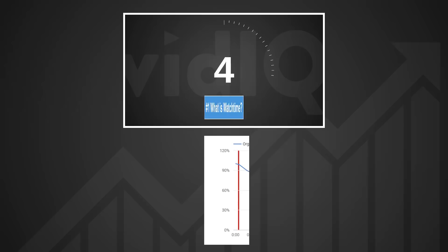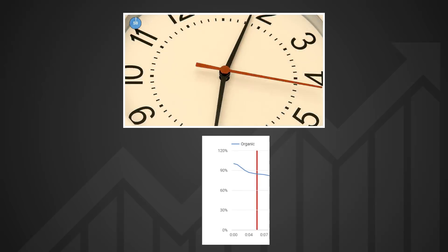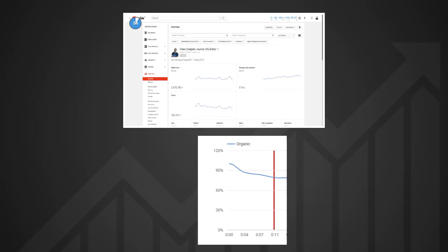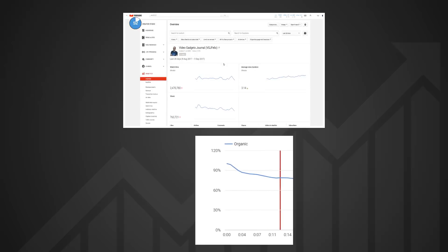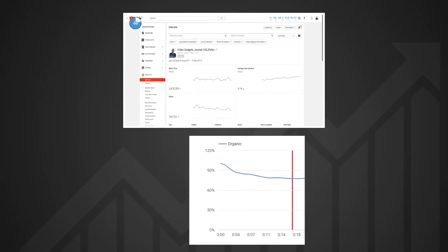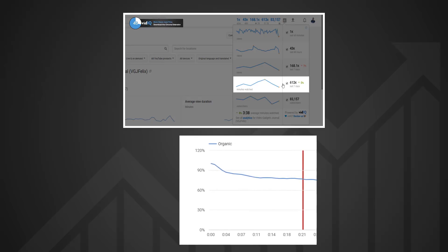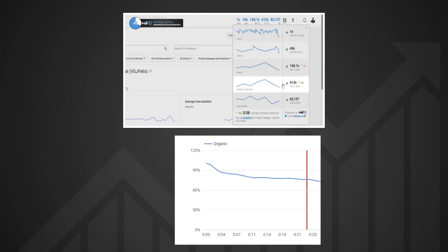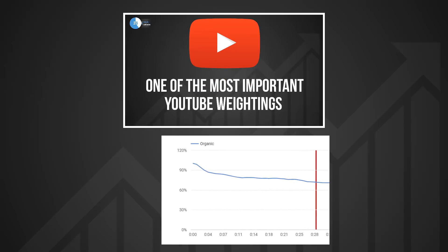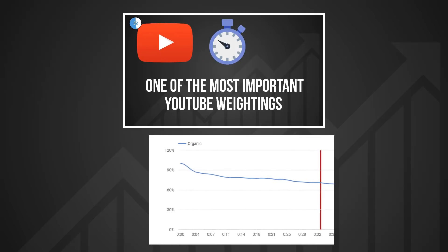Welcome to a brand new series called vidIQ Shorts — 60 seconds, one topic, let's go. Simply put, watch time is the total number of minutes viewers watch your YouTube videos for. You can look at your watch time from the YouTube analytics page for either your entire channel or for individual videos. The vidIQ real time stats bar also shows you watch time for the last seven days. While there are many factors that decide the success of a YouTube video, watch time is definitely one of the most important for one simple reason: the more minutes a viewer stays on YouTube, the more ads they can sell.